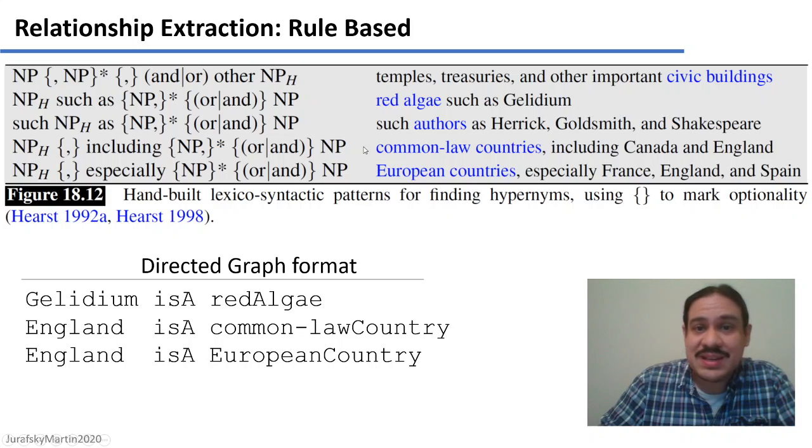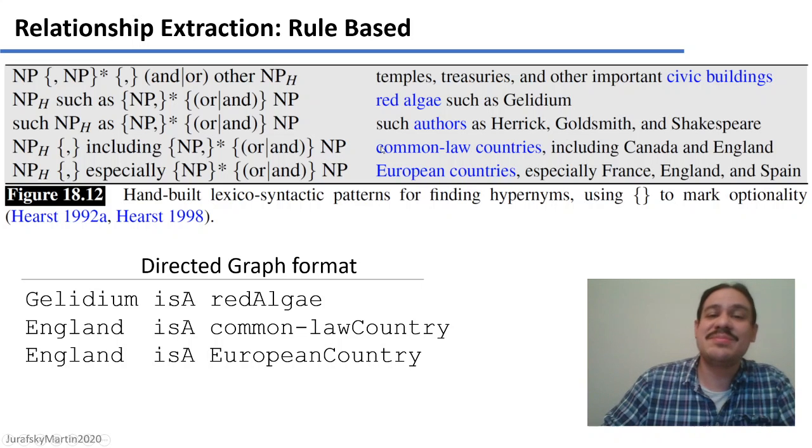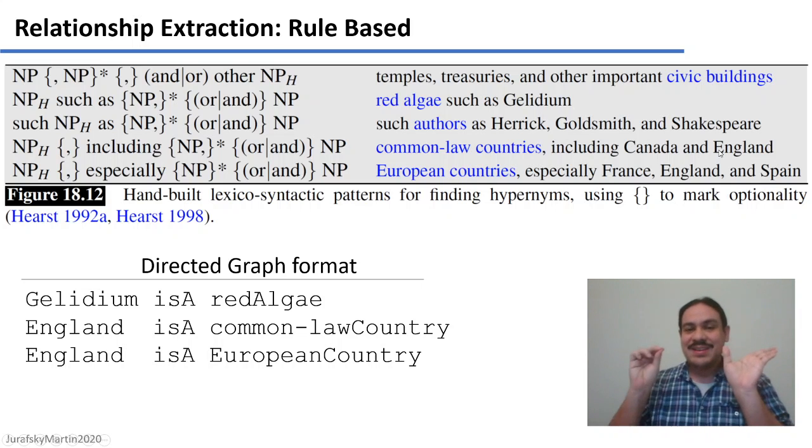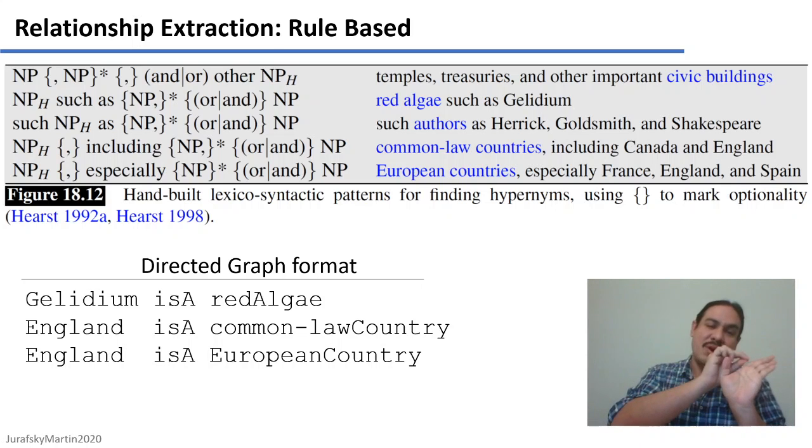The fourth regular expression has a similar example, noun phrase, including other noun phrases, and then final noun phrase, as in common law countries, including Canada and England. From this, we can extract that England is a common law country.